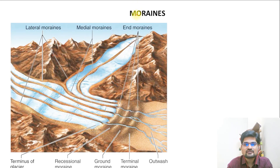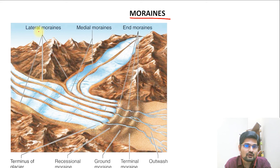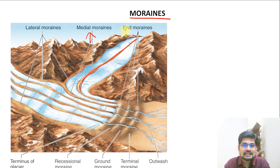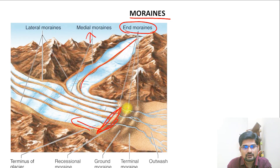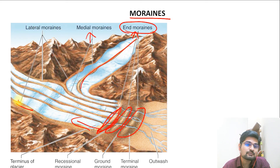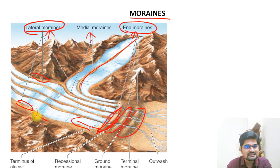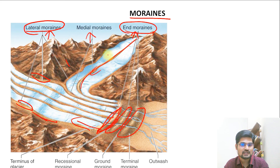An important depositional feature is moraines — fragments of rock carried and deposited by glacial erosion. Moraines are deposited in three ways: the medial moraine is deposited in the center along the glacier; the end moraine (terminal moraine) is deposited at the end as the glacier melts and retreats, forming mounds in the longitudinal course; and the lateral moraines are deposited on the sides of the glacier.